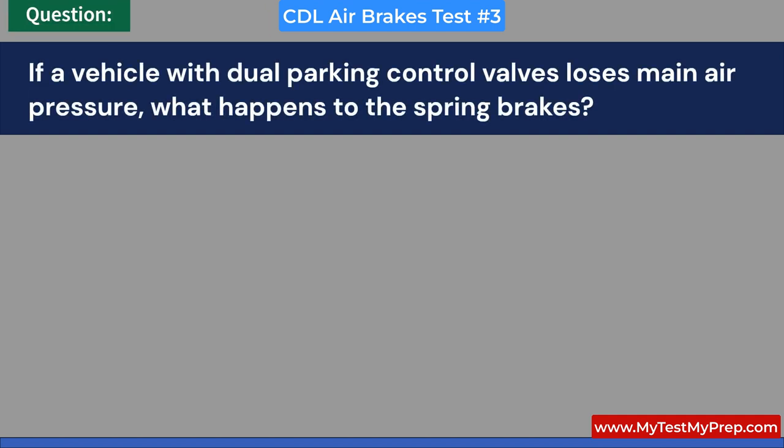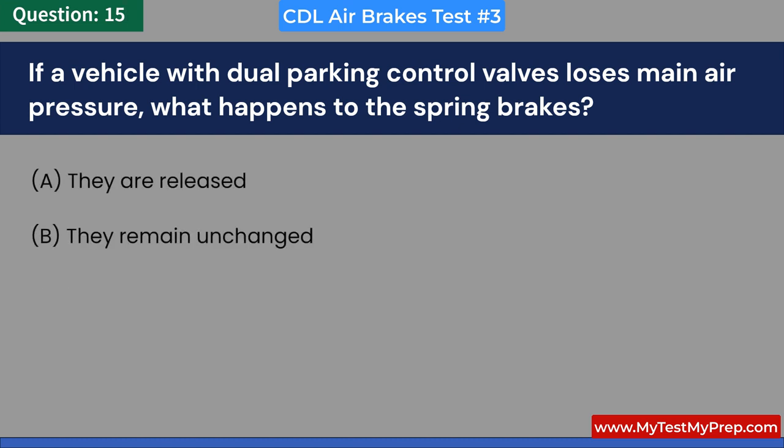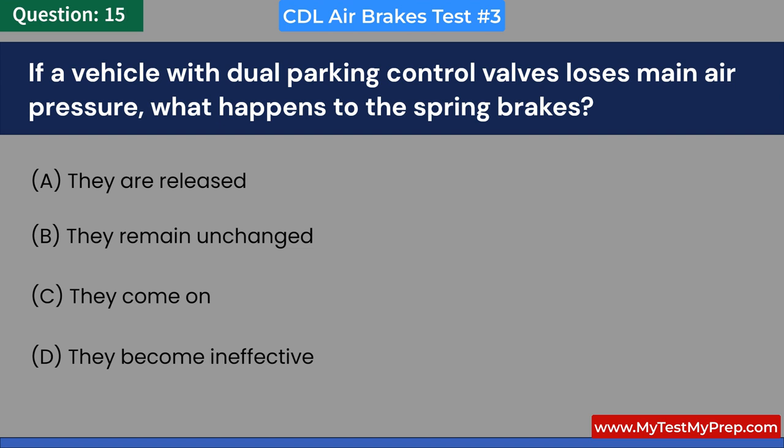If a vehicle with dual parking control valves loses main air pressure, what happens to the spring brakes? A. They are released. B. They remain unchanged. C. They come on. D. They become ineffective. Answer: C. They come on.